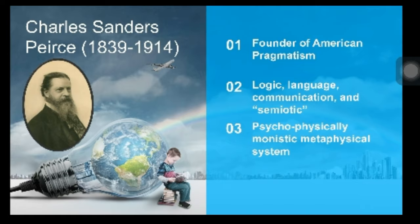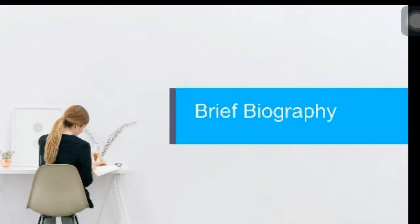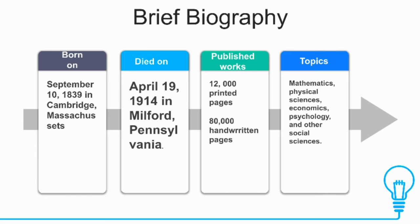In order for us to understand his main ideas, a brief biography: he was born on September 10, 1839, in Cambridge, Massachusetts, and died on April 19, 1914, in Milford, Pennsylvania. He produced up to 12,000 printed pages and 80,000 handwritten pages of published work, covering topics such as mathematics, physical sciences, economics, psychology, and other social sciences. This philosopher cared deeply about a wide variety of subjects.